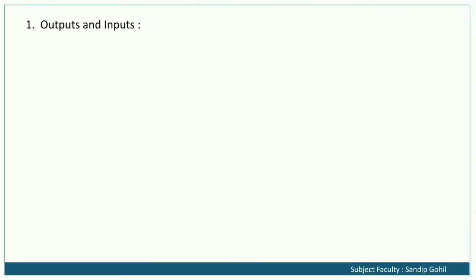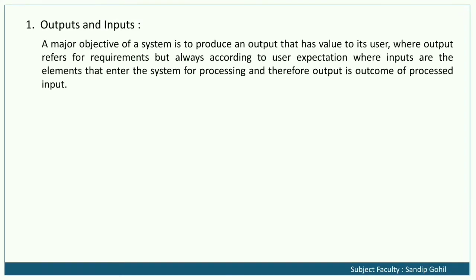Outputs and inputs: A major objective of a system is to produce an output that has value to its user. Outputs refer to the requirements and must always be according to user expectations. Inputs are the elements that enter the system for processing.